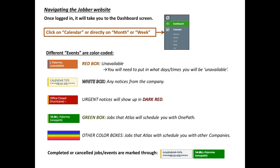Once you're logged in, please go to the calendar view — monthly or weekly. There you will see events that are color-coded. You will see company events such as office closings or any other notices, but your jobs should be in different colors such as green, pink, or black — anything that does not stand out like white or red.